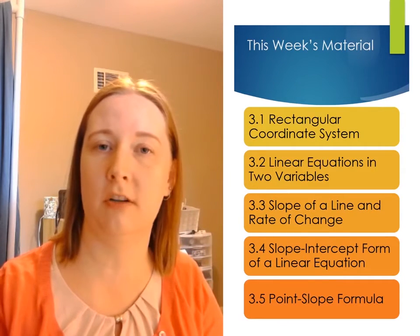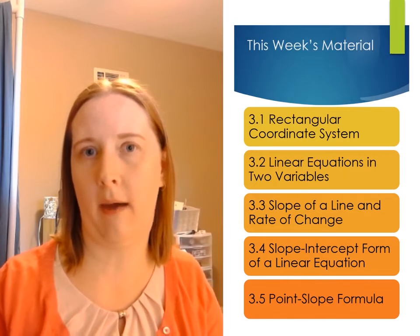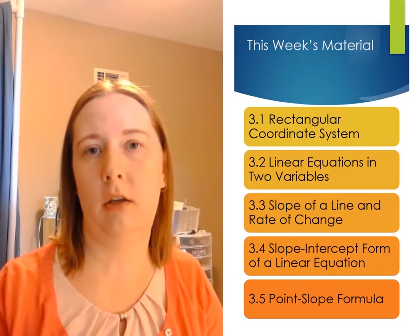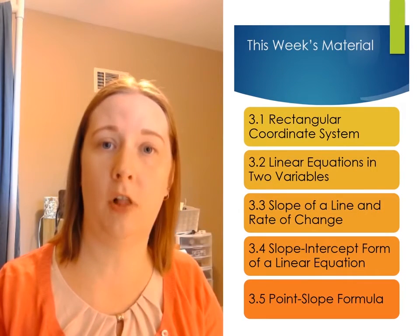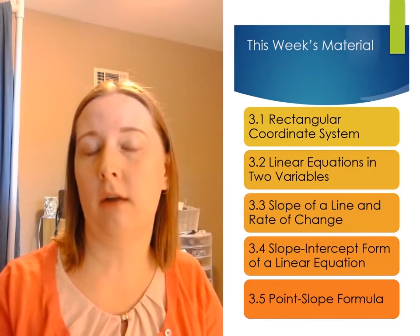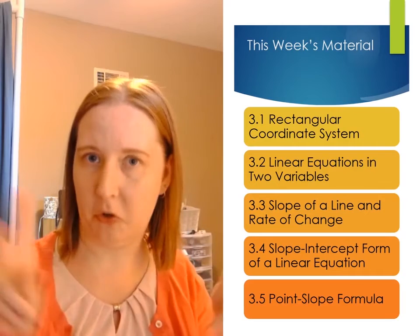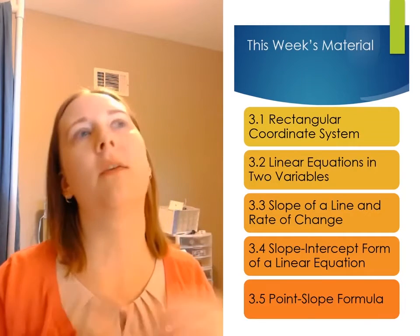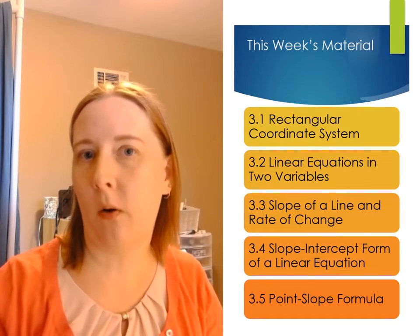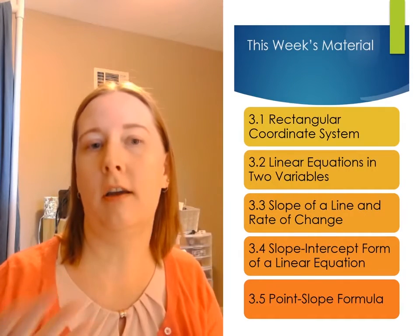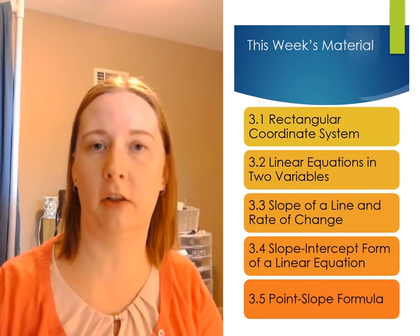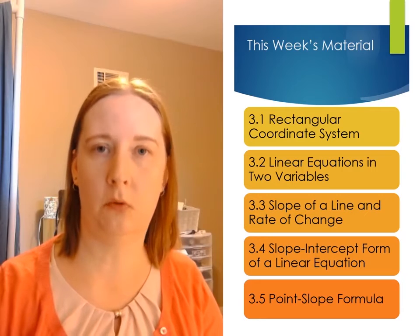We've got the rectangular coordinate system, which introduces you to how we graph and what it looks like. Then we've got linear equations of two variables, slope of a line and rate of change. That is really important because a lot of things like miles per gallon are technically slopes. Anything where you have something per something else — price per ounce, dollars per hour — that is all considered a slope or rate of change. Any situation where you're dealing with those can be written as a linear equation.